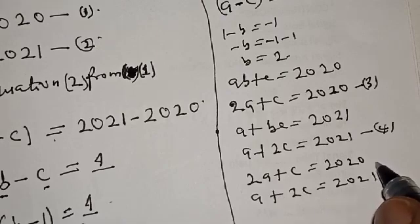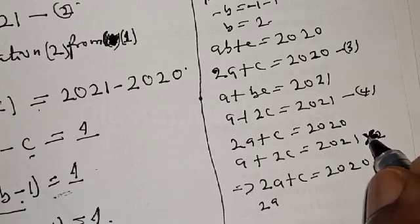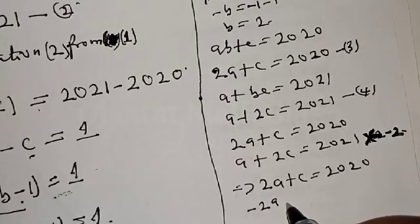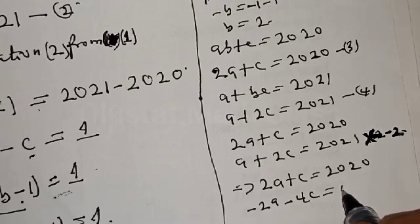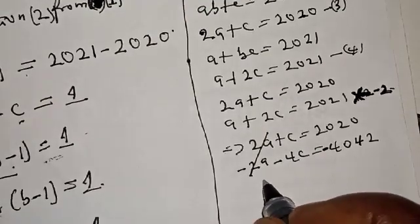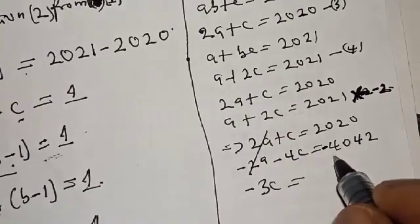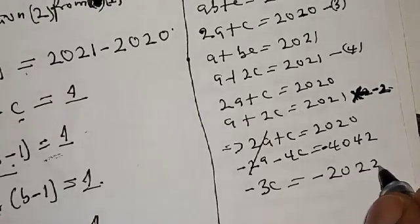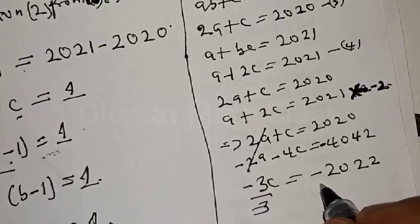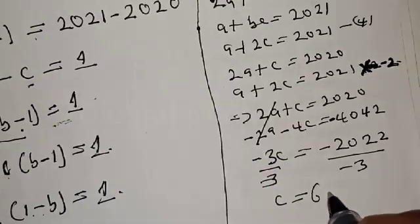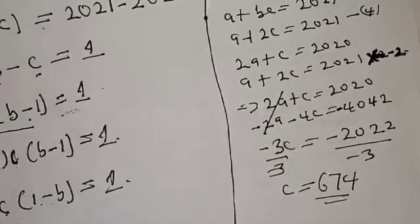From equations 3 and 4, we use the elimination method. Multiply equation 4 by minus 2 to get minus 2A minus 4C equals minus 4042. Adding to equation 3: C minus 4C gives minus 3C equals 2020 minus 4042, which equals minus 2022. Dividing both sides by minus 3, C equals 674.